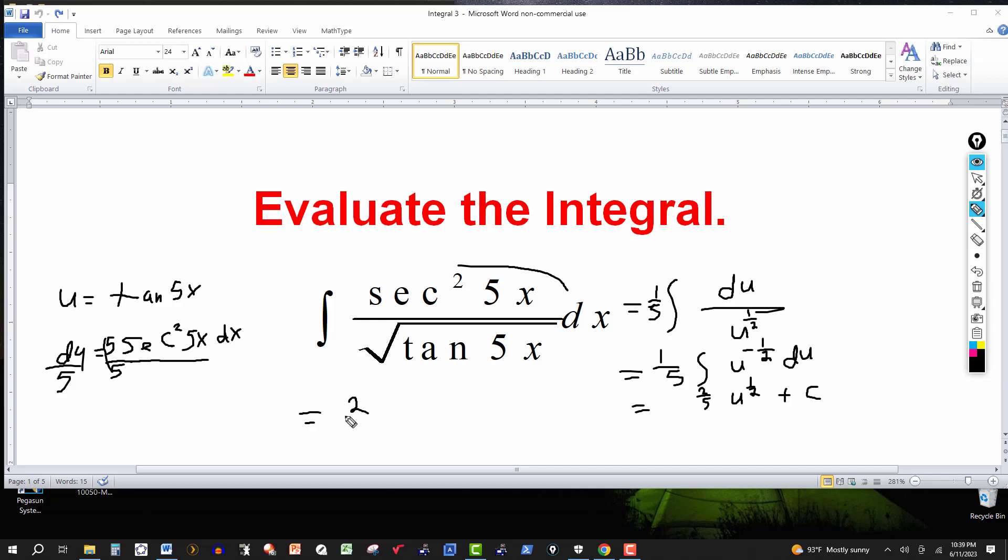Then we'll follow up over here. And this will be 2/5ths. And then we replace the u by tangent of 5x. And I can write the square root of this. So I can just put this to the 1/2. Plus the constant of integration.